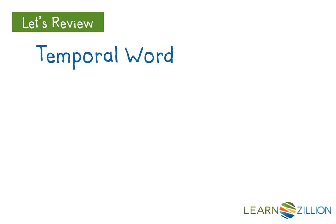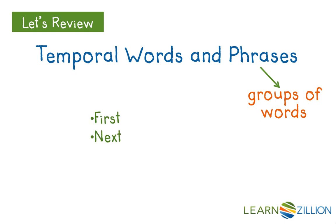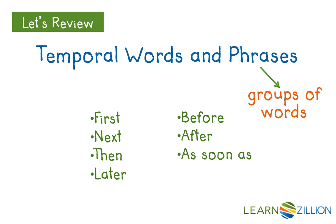Temporal words and phrases are words and groups of words that tell when something happens. Some examples of temporal words and phrases are: first, next, then, later, before, after, as soon as, finally.